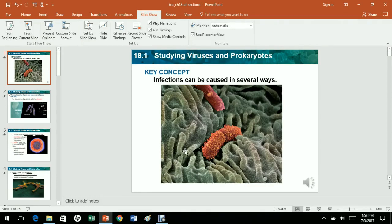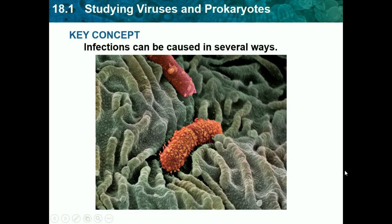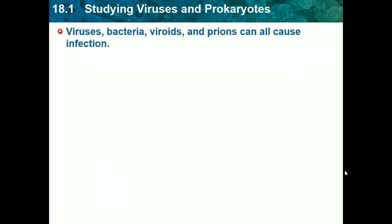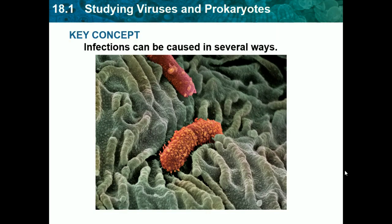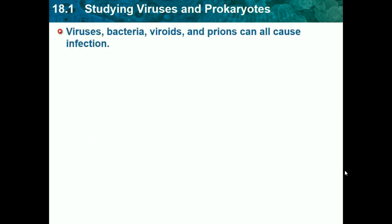Hello, this is Joshua Patel back again with another biology video. Today we will be doing chapter 18, which is viruses and prokaryotes. We'll start at 18.1, which is studying viruses and prokaryotes. Our key concept is that infection can be caused in several ways. Just a warning that this chapter has a lot of specific details we don't need to know, so basically just get the overall ideas and I'll tell you what's important.